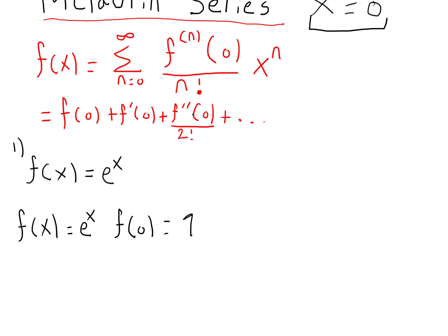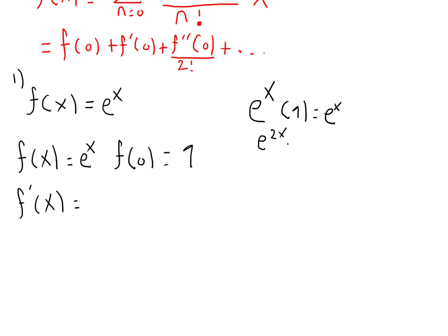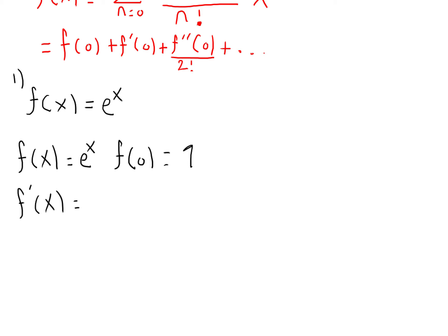That value of 1 is going to be useful for your first term. Next, take the derivative of e^x. The derivative of e^x is just e^x again, since the coefficient in front of x is 1. If you had e^(2x), you would multiply the whole function by 2 to get 2e^(2x). I highly recommend reviewing these derivative concepts before proceeding, as they're very important for Maclaurin and Taylor series.